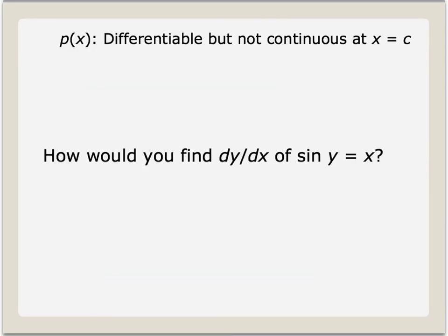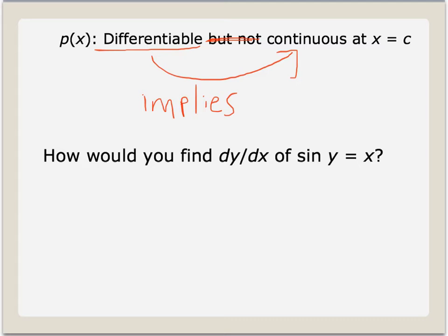Now try to draw a function that's differentiable but not continuous at x equals c. Pause and try to graph this. I hope you had difficulty with this problem, because this is not possible. As soon as a function is differentiable — meaning you can zoom in on it and it becomes a line — it automatically has to be continuous. This is a trick question; it cannot be done. This illustrates the relationship between differentiability and continuity: differentiability implies continuity.